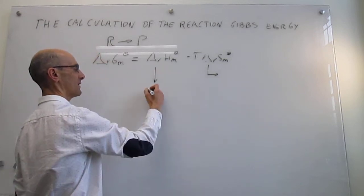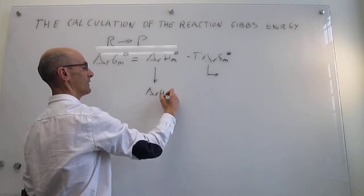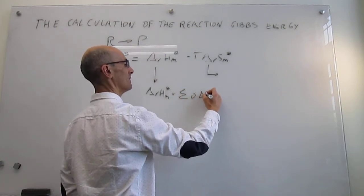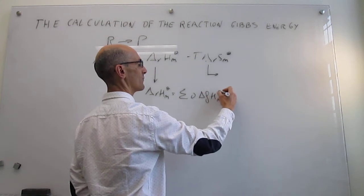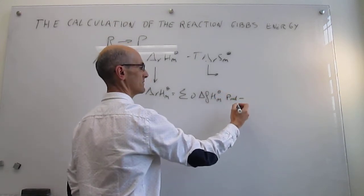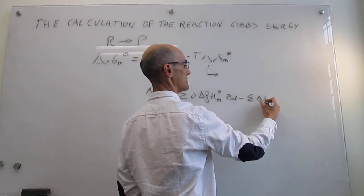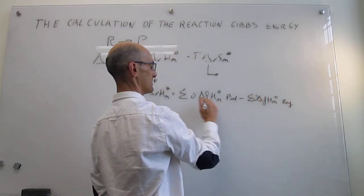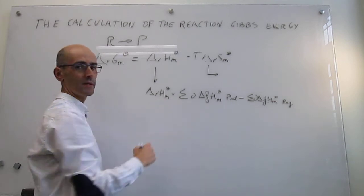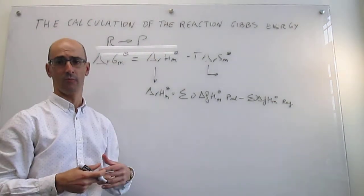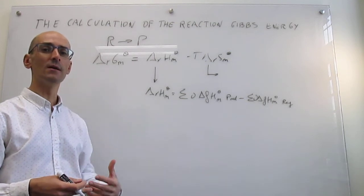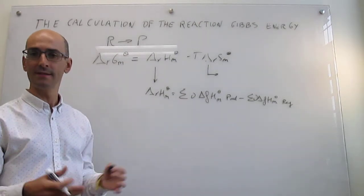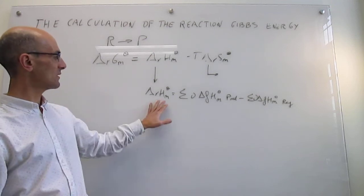For the reaction enthalpy, the way we proceed is simply: the sum of the standard enthalpies of formation of products minus the sum of the standard enthalpies of formation of reagents, each multiplied by their respective stoichiometric coefficients. So for the enthalpy, we look at the products, find the enthalpies of formation in tables, multiply by the stoichiometric coefficients, and subtract those of the reagents multiplied by their stoichiometric coefficients.